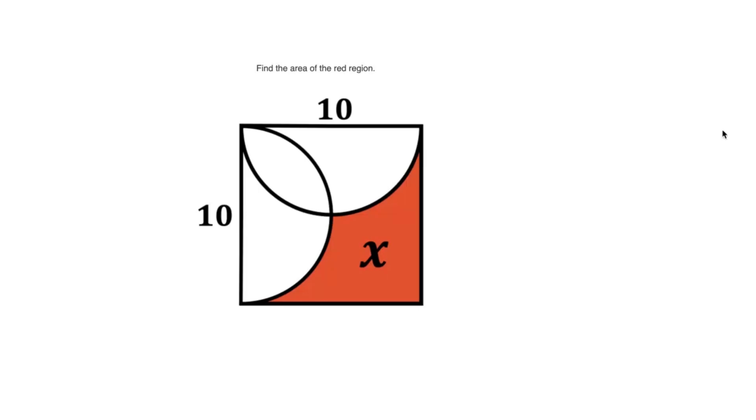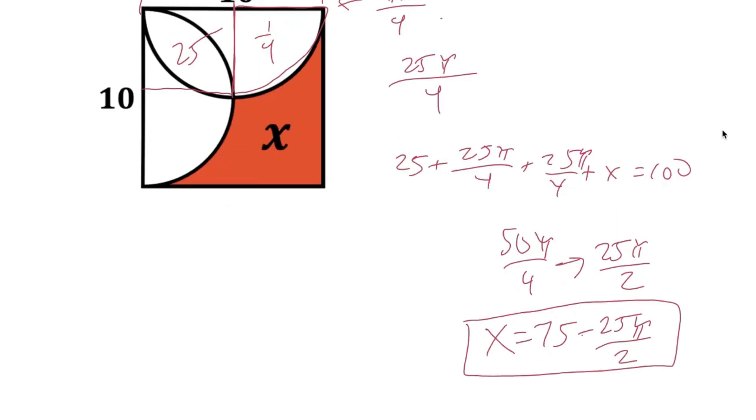Can you find the area of the red region? Okay, we got a 10 by 10 square with two semicircles inside of it, and we're asked to find the area of that red region labeled x. Pause the video, see if you can solve it, and let's get into one way that you can solve the problem.